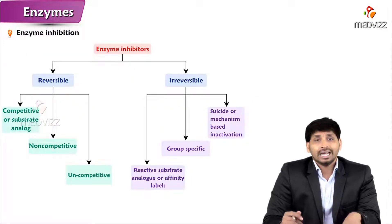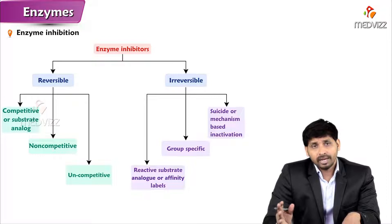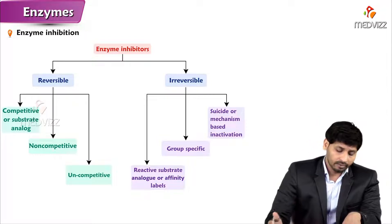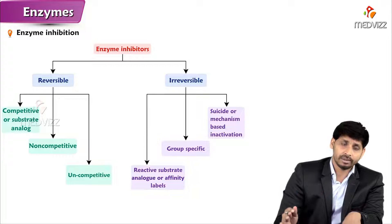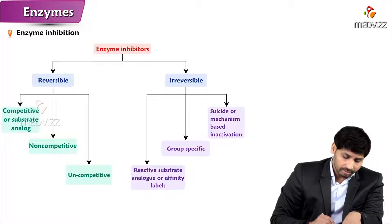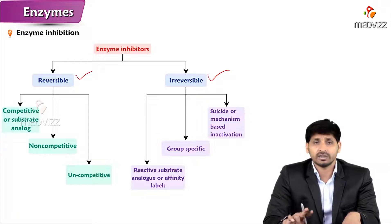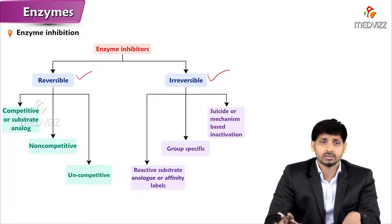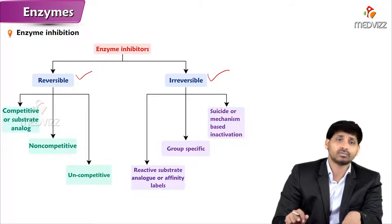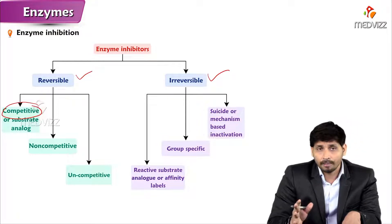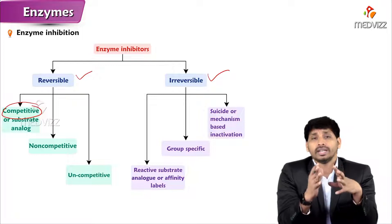Inhibitors play a major role in enzyme inhibition. Enzyme inhibition is of two main types: reversible and irreversible. Reversible inhibition is further subcategorized into three types: competitive (or substrate analog), non-competitive, and uncompetitive inhibition.